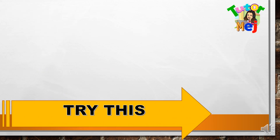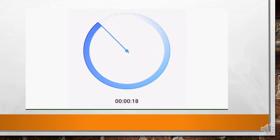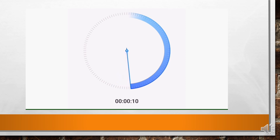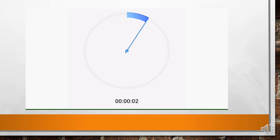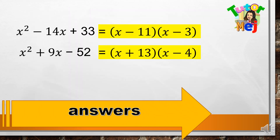Subukan natin ang iyong pagkatuto. Try answering this: x squared minus 14x plus 33, at x squared plus 9x minus 52. Timer starts now. Ang mga sagot: (x minus 11)(x minus 3) at (x plus 13)(x minus 4). Nakuha nyo ba? Hanggang sa muli!